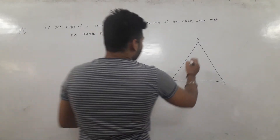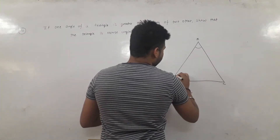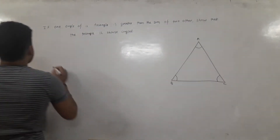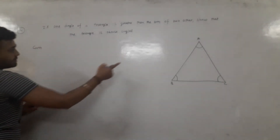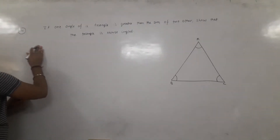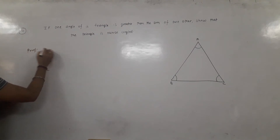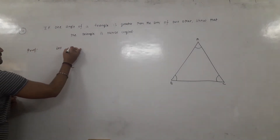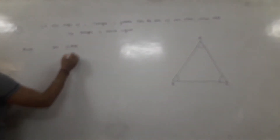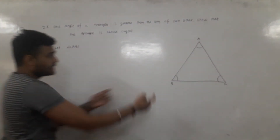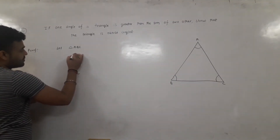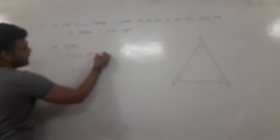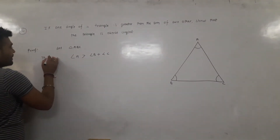How do we do it? We say that the triangle is ABC. Given: triangle ABC, where angle A is greater than angle B plus angle C. To prove: the triangle is obtuse angled.